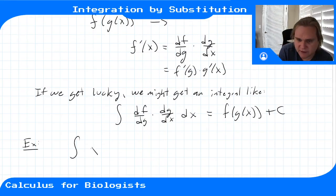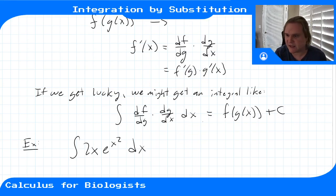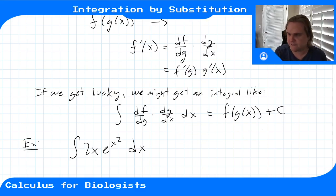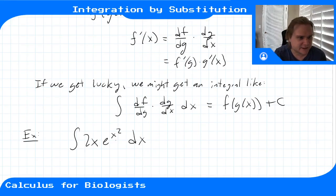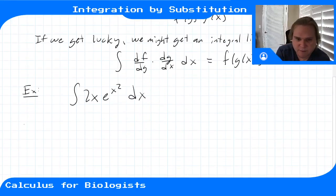An example of that would be the integral of 2x times e to the x squared dx. It might not be obvious that this is the chain rule in reverse, but when you get an integral like this, you might say that looks like the derivative of the inside function. To recognize this is the chain rule, we do what's called a u-substitution.